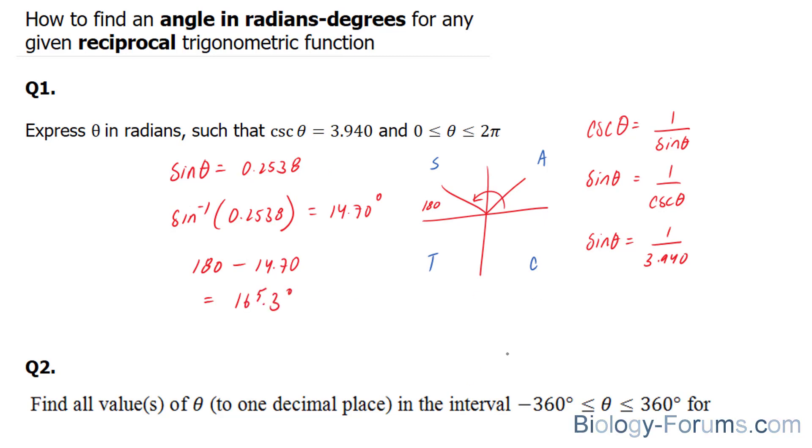So there you have it. That is how to find the two angles between 0 and, in our case, 360 degrees for this reciprocal trigonometric function.